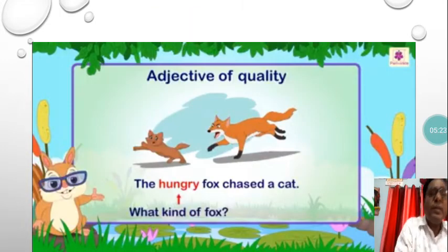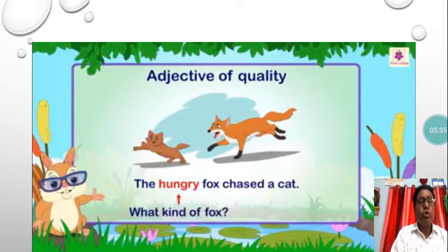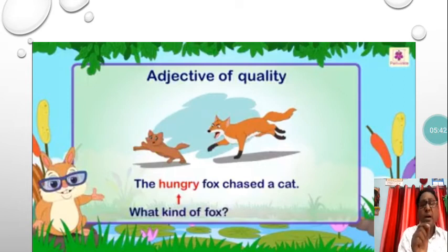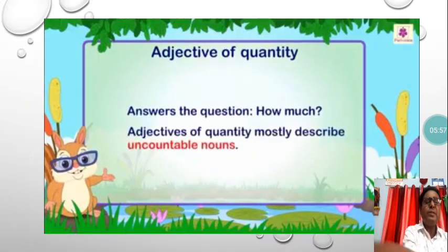Some more examples of adjective of quality: The hungry fox chased a cat. What kind of fox chased a cat? The hungry fox. So, before fox — which is a noun — the word hungry is used. The hungry fox chased a cat, so hungry is here describing the fox, the noun. Therefore, hungry is an adjective of quality in this sentence.